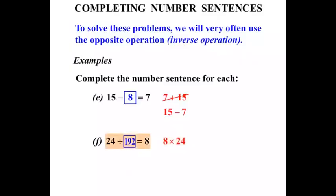Now checking the answer, 24 divided by 192 certainly does not equal 8. So when that's the case, let's cross that out. Let's just work from left to right. 24 divided by 8, and that is 3.